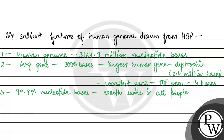The fourth feature is that over 50% of the discovered genes of the human genome have functions that are unknown.